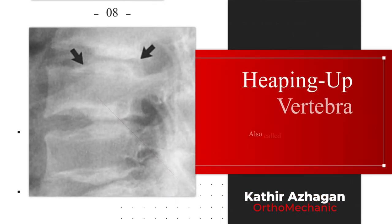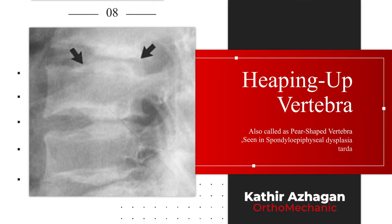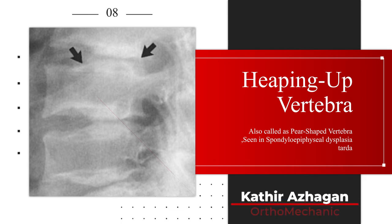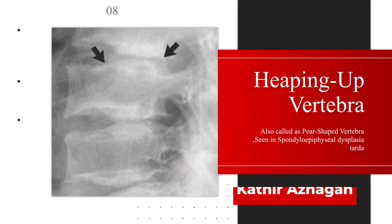Heaping up vertebra, also called spear-shaped vertebra, is seen in spondyloepiphyseal dysplasia tarda. This occurs as a result of accumulation of bone at the posterior aspect of the superior and inferior vertebral end plates.